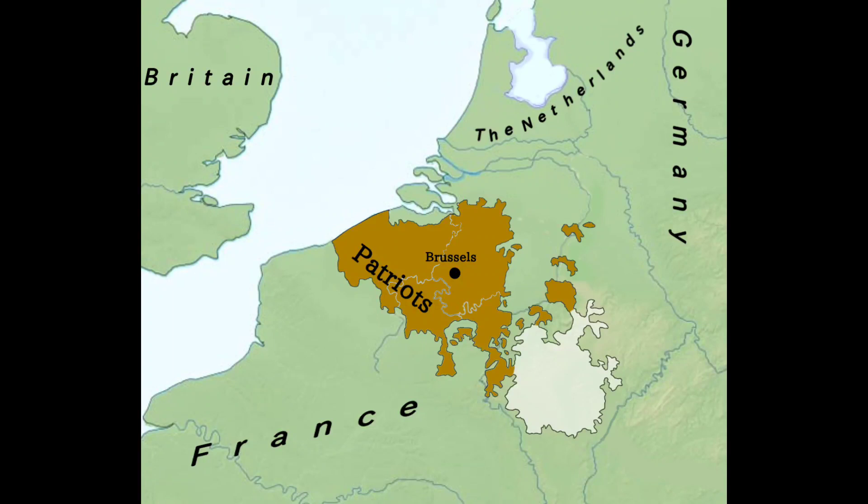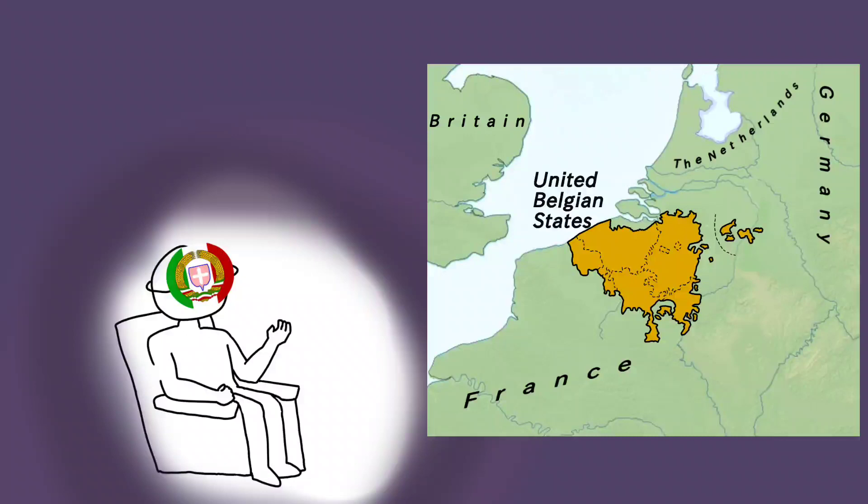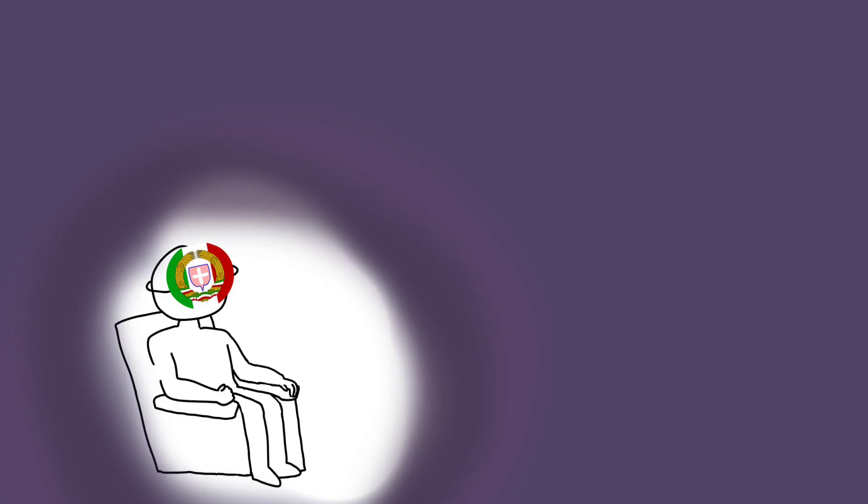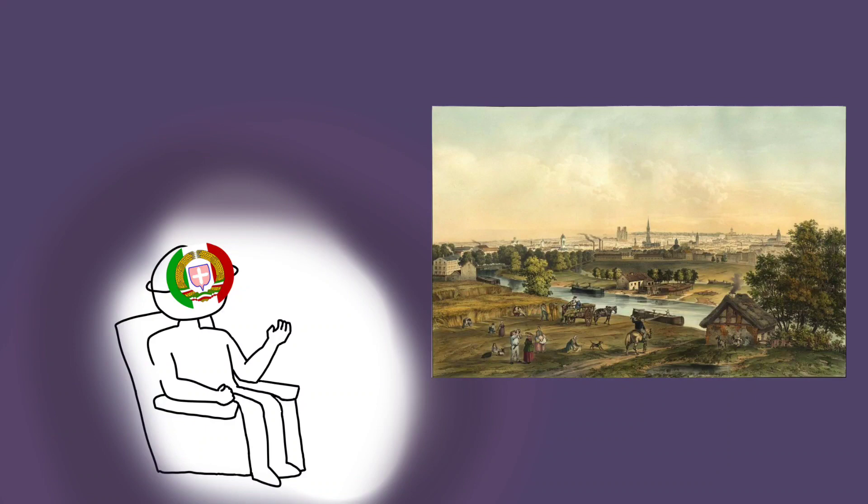The consolidation of territorial gains prompted the rebels to look inwards, and, inspired by the American Revolution, the United Belgian States was officially formed with the Treaty of Union in January of 1790. Brussels, the most important recent conquest of the rebels, was made the capital of this new state, as it would host the sovereign congress that would act as a parliament for the new country.